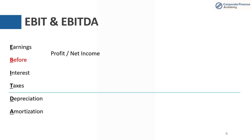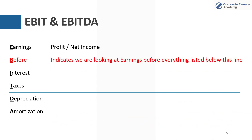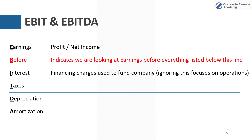Earnings is nothing more than net income or your profit. 'Before' is really just indicating that we are trying to look at those earnings — that net income — before everything listed below this line. Interest has to do with financing charges; this is the capital structure used to fund the company. Ignoring interest helps you focus just on your operations.